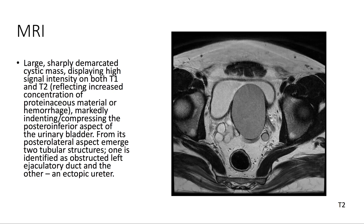On MRI, we again see a large, sharply demarcated cystic mass with high signal intensity on both T1 and T2-weighted imaging. It's markedly compressing the postero-inferior aspect of the urinary bladder. From its posterolateral aspect emerged two tubular structures, identified as an obstructed left ejaculatory duct and an ectopic ureter.